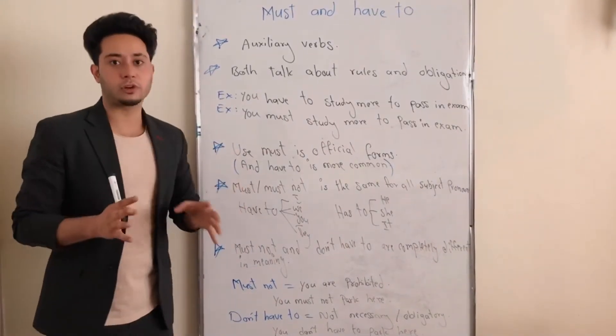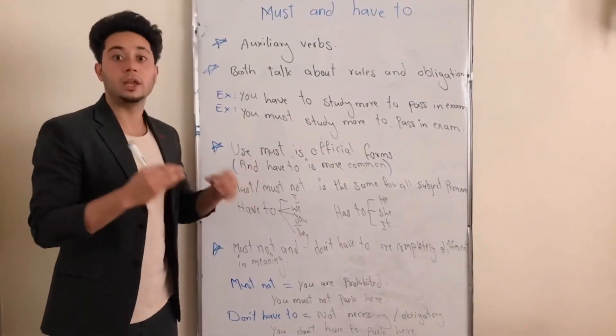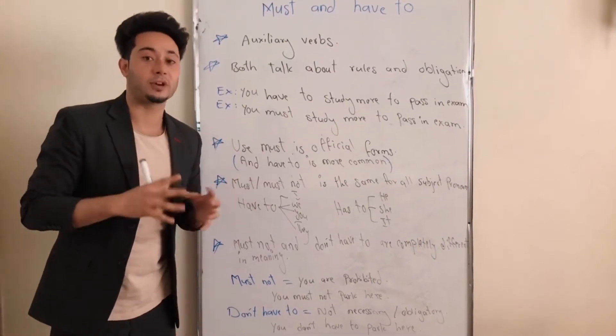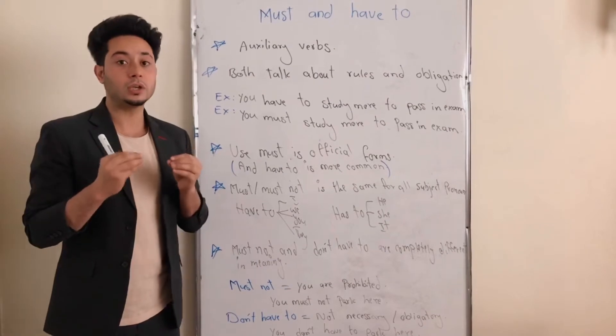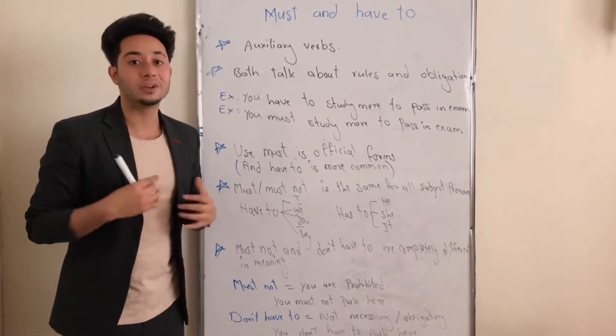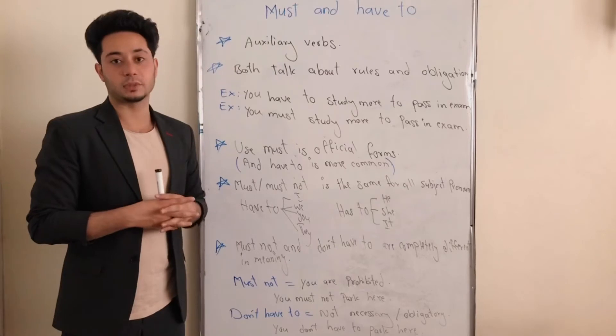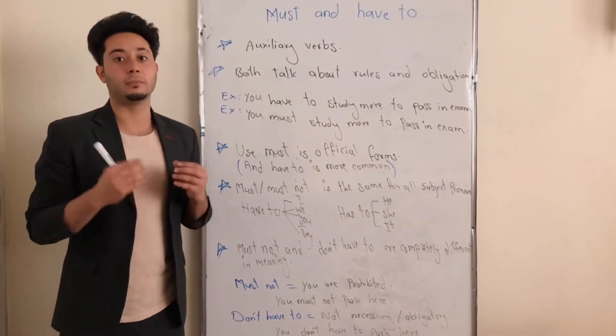We use must in official forms, but we use have to in more common speaking. It means that when we are talking commonly, we can use have to more than must. And when we're talking officially with someone, it would be better to use must.